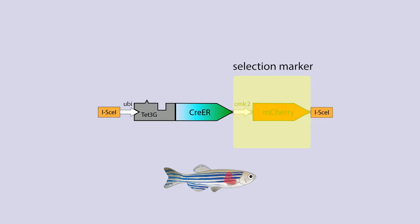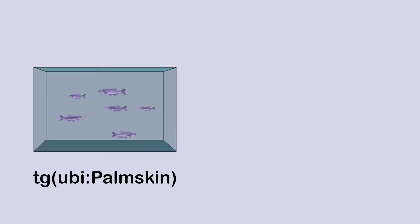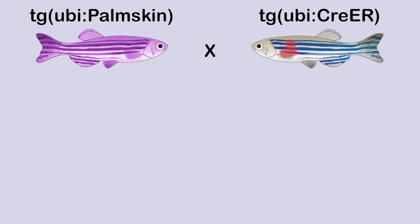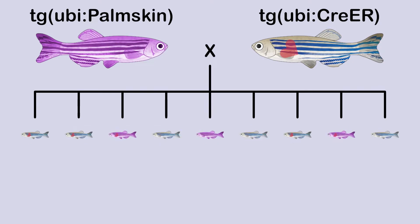The same selection process is done with this construct as the previous one. Now there are two tanks — one with the first construct, and one with the second. Crossing together one fish from each tank will give one-fourth of the offspring with neither construct, one-fourth with only the palm skin construct and therefore only UV fluorescence, one-fourth with only the Cre recombinase construct and therefore only red heart fluorescence, and one-fourth with both constructs, giving both UV fluorescence and red heart fluorescence. Only the offspring with both traits and therefore both constructs are kept further.